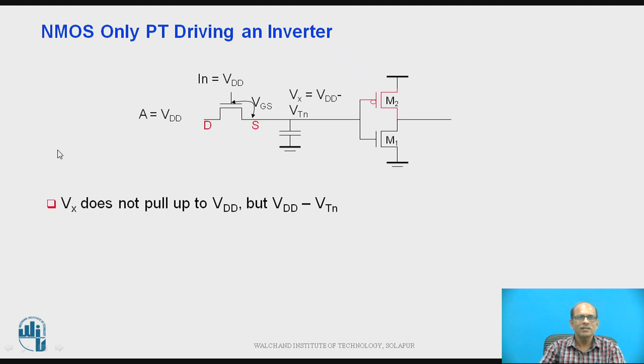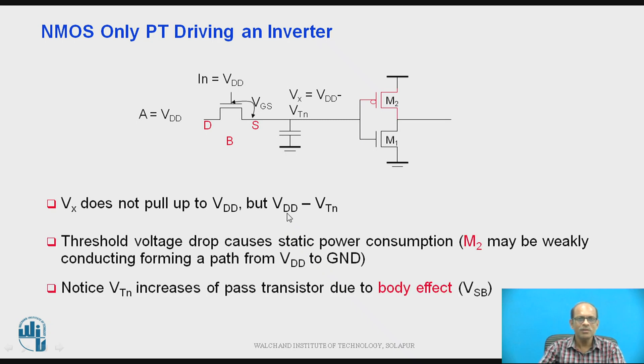Now let us consider the NMOS output. So it is equivalent capacitance and then it passes through the inverter. So here what happens? The input is equal to VDD, output at the source is not VDD but it is less than VDD because the φGS has to be threshold voltage and therefore the φX does not pull up to VDD but VDD minus φTN and due to this VDD minus φTN voltage drop across this transistor the static power dissipation increases. So notice the φTH increases of the power pass transistor due to body effect.